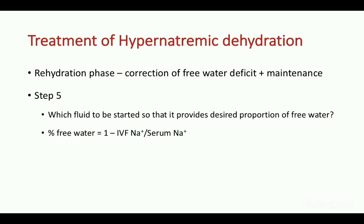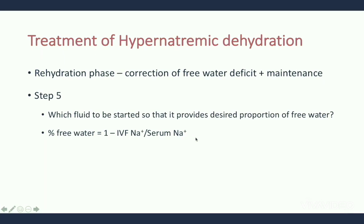The next and most crucial step is deciding which fluid to start so that it provides the desired proportion of free water. When serum sodium is severely high — more than 180 or 190 — even an isotonic fluid may be hypotonic relative to the patient's sodium, so we need to prepare a fluid with the required sodium concentration. This is the step where most mistakes occur, and many of us have difficulty and confusion about what fluid to give.